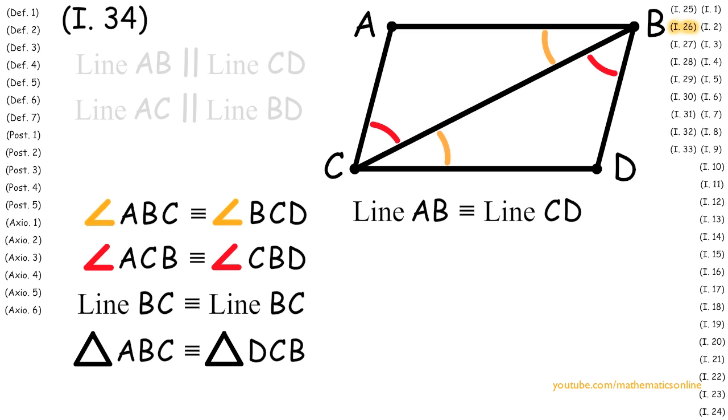Line AB is congruent to line CD, line AC is congruent to line BD, and angle BAC is congruent to angle CDB.